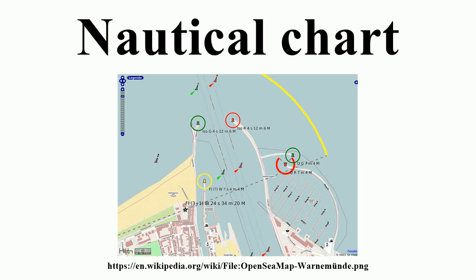A nautical chart is a graphic representation of a maritime area and adjacent coastal regions. Depending on the scale of the chart, it may show depths of water and heights of land, natural features of the seabed, details of the coastline, navigational hazards, locations of natural and human-made aids to navigation, information on tides and currents, local details of the Earth's magnetic field, and human-made structures such as harbors, buildings and bridges.